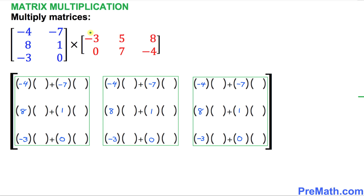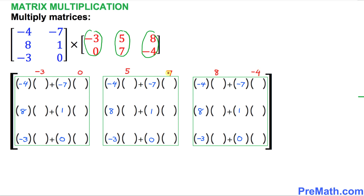Looking at the red matrix, we take each column and convert it into a row. The first column, negative three and zero, becomes the row negative three, zero. The next column, five and seven, becomes the row five, seven. Finally, the last column, eight and negative four, becomes the row eight, negative four.